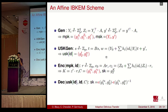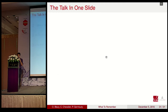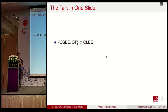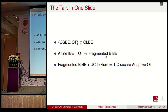Many IBE schemes achieve the required IFIT IBE structure. One simple example from the literature has user secret keys of only two group elements, encryptions of only two group elements, and decryptions requiring only two pairings. In summary: OSBE and oblivious transfer are OLBE constructions; IBE plus oblivious transfer yields a fragmented blind IBE; and fragmented blind IBE combined with UC folklore yields a UC-secure adaptive oblivious transfer.